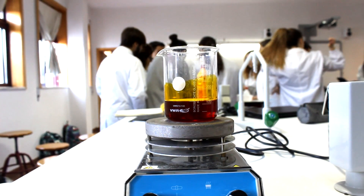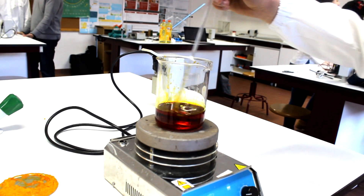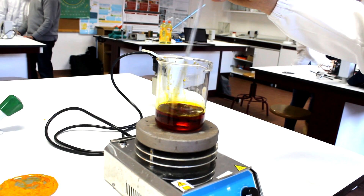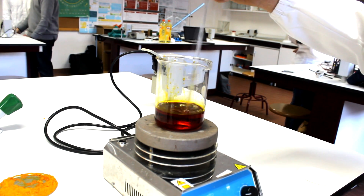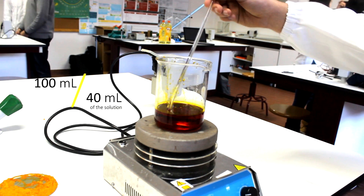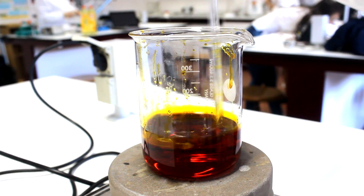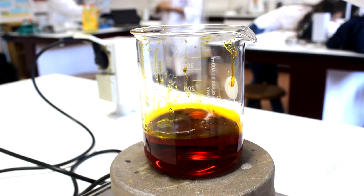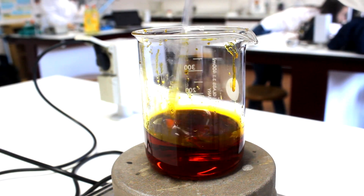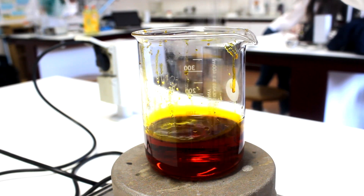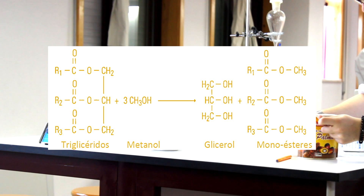After several trials, we concluded that the most efficient ratio would be 100 ml of oil for every 40 ml of the solution. The next step was to mix both the compounds, and so we created what we hoped to be biodiesel.